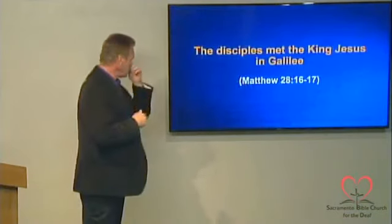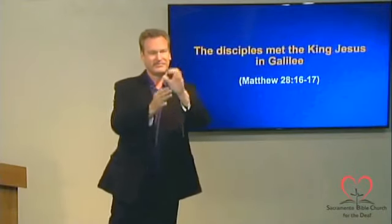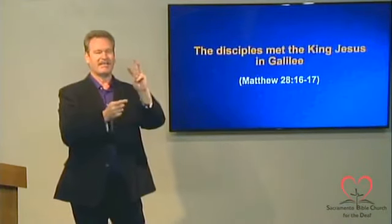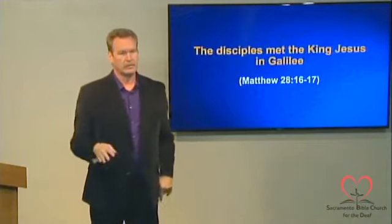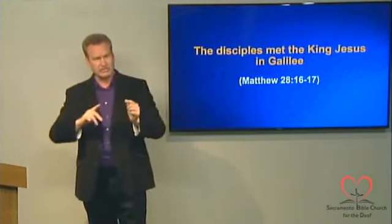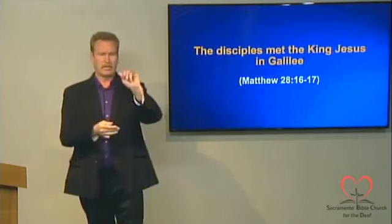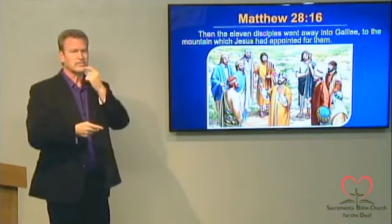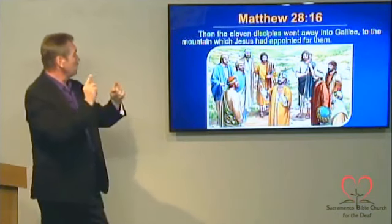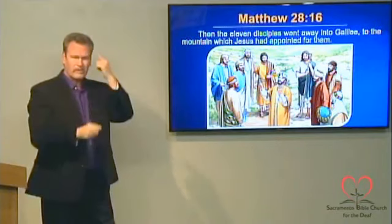In Matthew 28:16-17, the 11 disciples went to the mountain in Galilee which Jesus had appointed for them. It's significant that Jesus had appointed this place for them — before he was crucified, he told them he would die, and then told them that he would resurrect and meet them in Galilee.